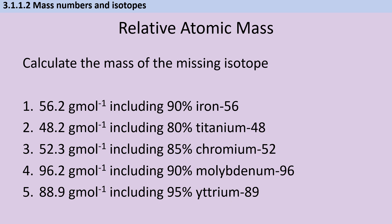So with a bit of luck, you've worked out that the missing isotopes are iron-58, titanium-49, chromium-54, molybdenum-98, and yttrium-87.